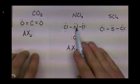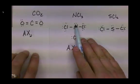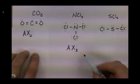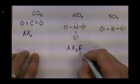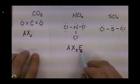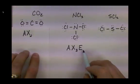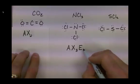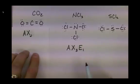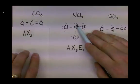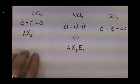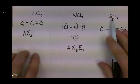This time around, the nitrogen does have a lone pair, so we're going to represent that with E. You can either leave the subscript off or include it, but a subscript 1 represents that there is one lone pair of electrons on that nitrogen.